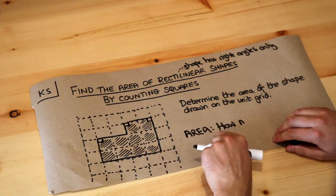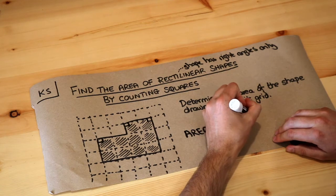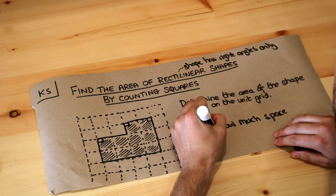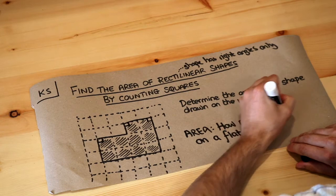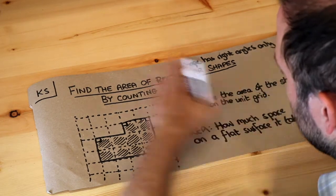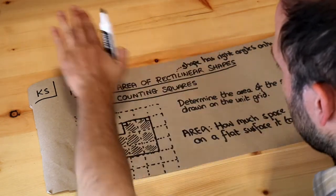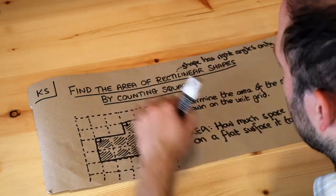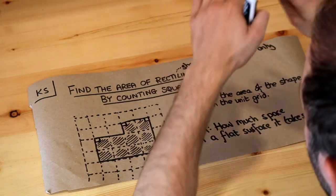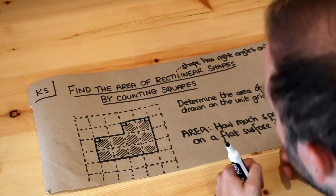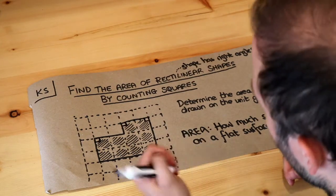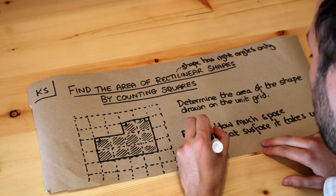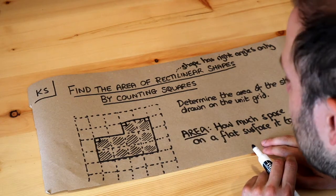Now the area of a shape just means how much space on a flat surface it takes up. By flat surface I just mean something that's two-dimensional, so flat. We have 2D shapes like squares and rectangles, and 3D shapes are things like spheres, cones, and cuboids. So we want to work out how much space something takes up.